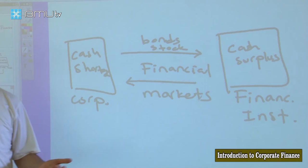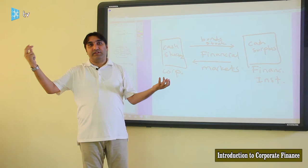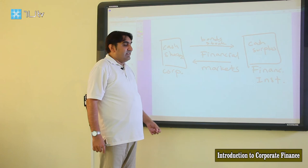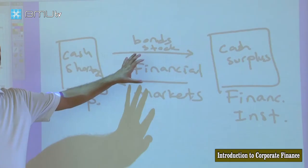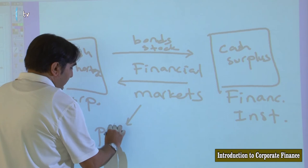Financial markets are places where those in need of cash and those with cash surplus come together and exchange. Financial markets are very developed in the modern world — there is very little physical market anymore; almost all transactions happen online. We divide financial markets into primary markets and secondary markets.